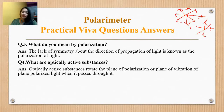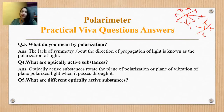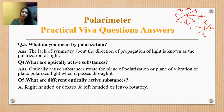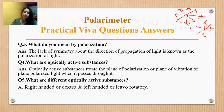Which way does it rotate the plane? Accordingly, we classify optically active substances into two categories: right-handed or dextro, and left-handed or levo. Right-handed means that if the plane of polarization rotates in a clockwise direction, it is called right-handed or dextrorotatory.